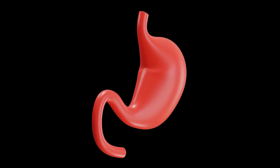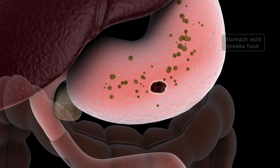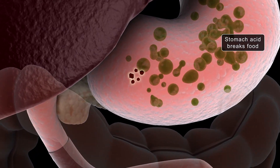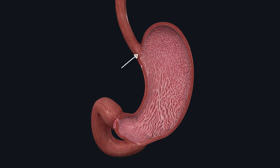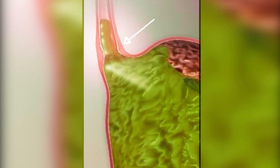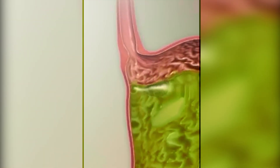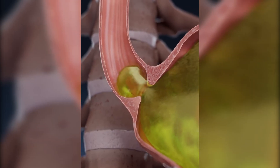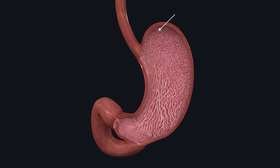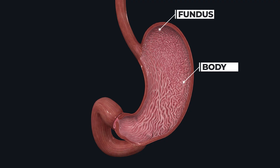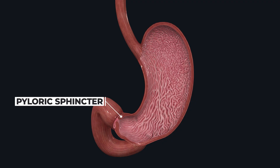The stomach is a J-shaped muscular organ where the chemical digestion of food takes place. The upper opening is called the cardia, where the lower esophageal sphincter is present. This sphincter opens to let food enter the stomach and closes to prevent stomach acid from flowing backward. The top raised part is called the fundus, and the main central area is called the body of the stomach. The last part is called the pylorus, which contains the pyloric sphincter that opens to pass food into the small intestine.